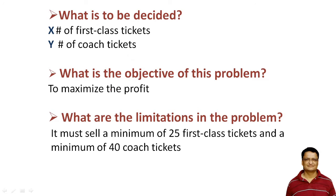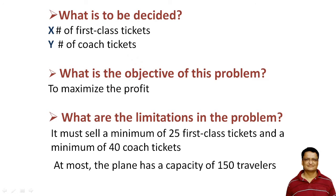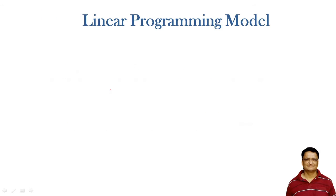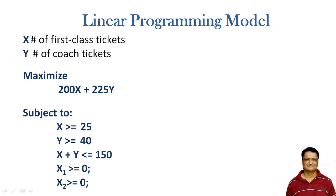The limitations are: it must sell a minimum of 25 first class tickets and 40 coach tickets — that is one constraint. And the plane has a capacity of 150 travelers — that is another constraint mentioned in the problem. So let us construct the LPP model out of this problem.